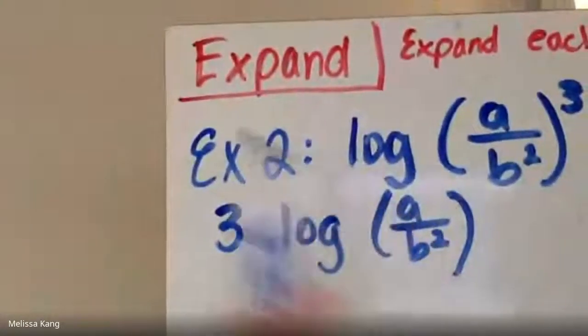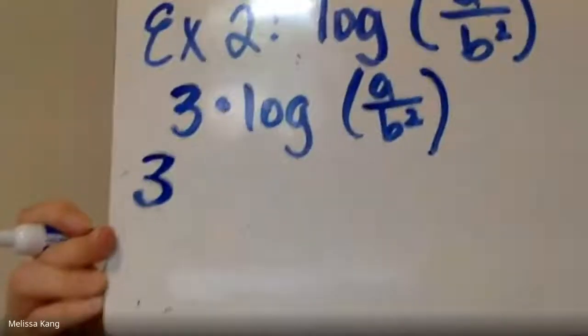And now it's just like the last problem, right? I have division though this time. Division, so I have to deal with the division. Oh yeah, subtraction. And then because I have a three outside, I need parentheses because now that three applies to both, so I need the parentheses to be there.